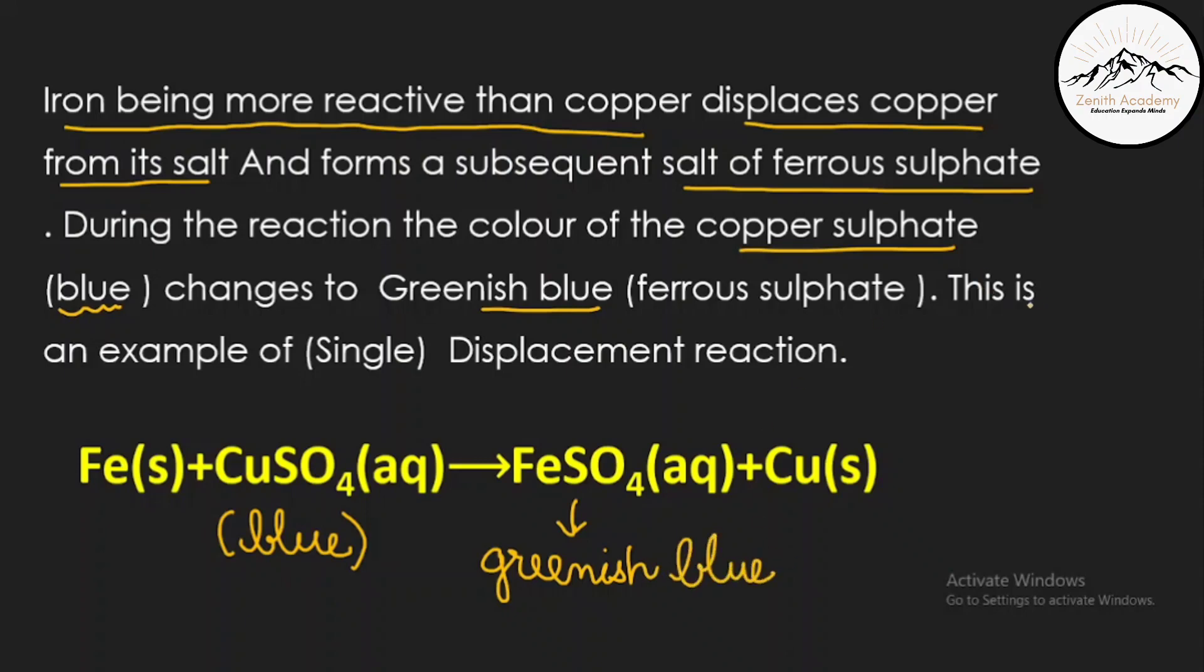This is an example of displacement reaction or we can call it as single displacement reaction because only iron is coming here. Iron is kicking off this copper from its solution. So this copper remains alone and then iron sits here. So it becomes FeSO4, ferrous sulfate. So now let's go to the lab and perform this experiment and see for ourselves.